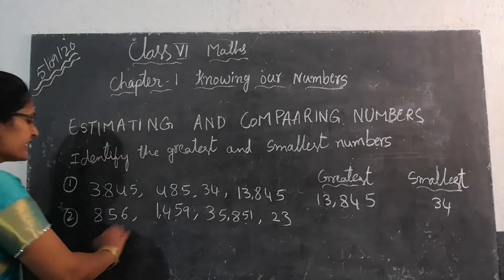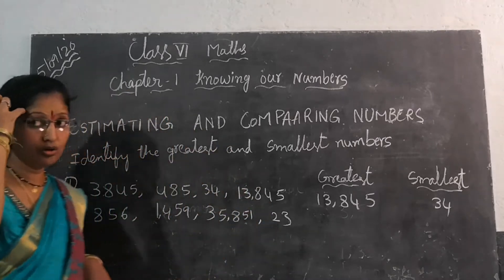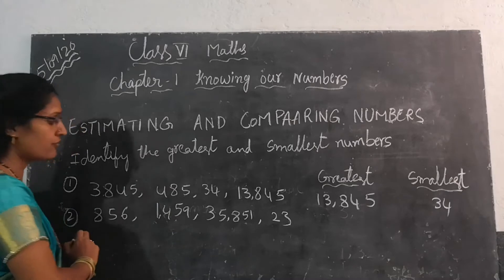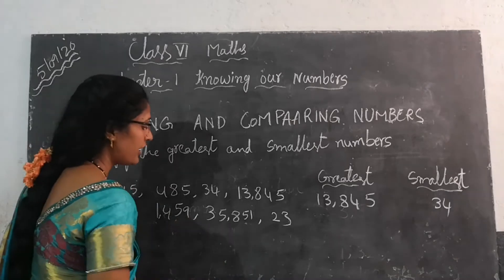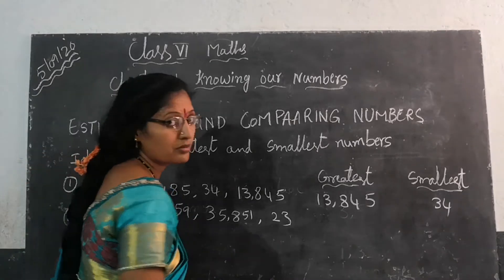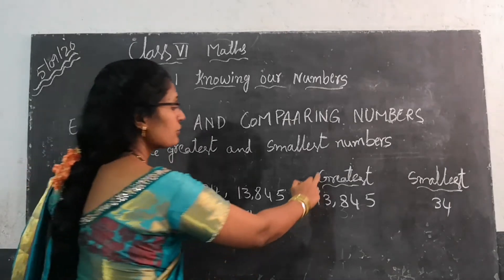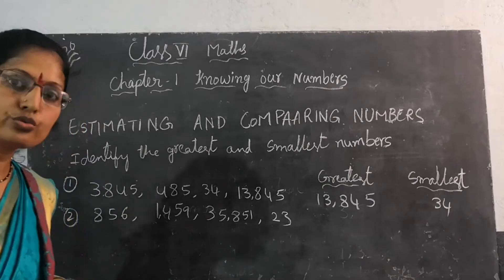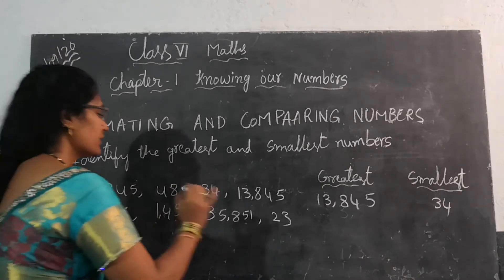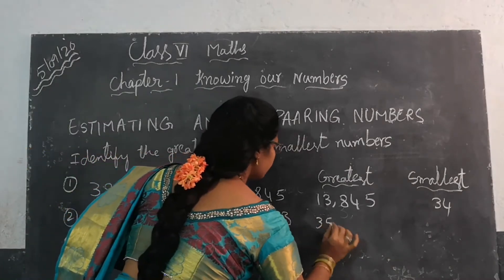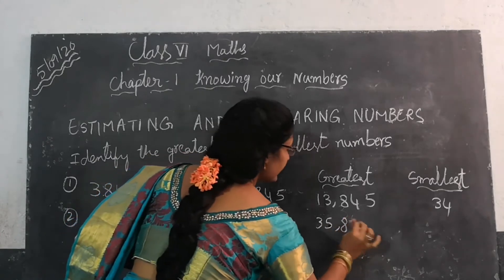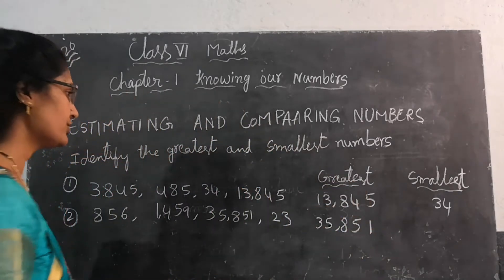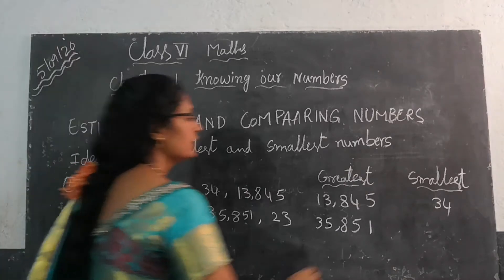First, we have to count the digits of each number. This has 3 digits; this has 4 digits; this has 5 digits; this has 5 digits; this has 2 digits. We have to find the greatest number — the one with the most digits. 35,851 is the greatest number in this row. The smallest number is 23.